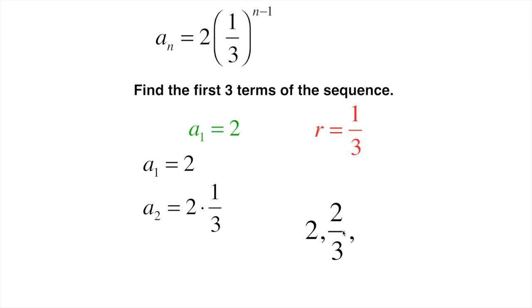Now in order to find the third term in the sequence, we take our second term which is two thirds and multiply that by the ratio one third. So two thirds times one third would give me two ninths. So here are the first three terms.